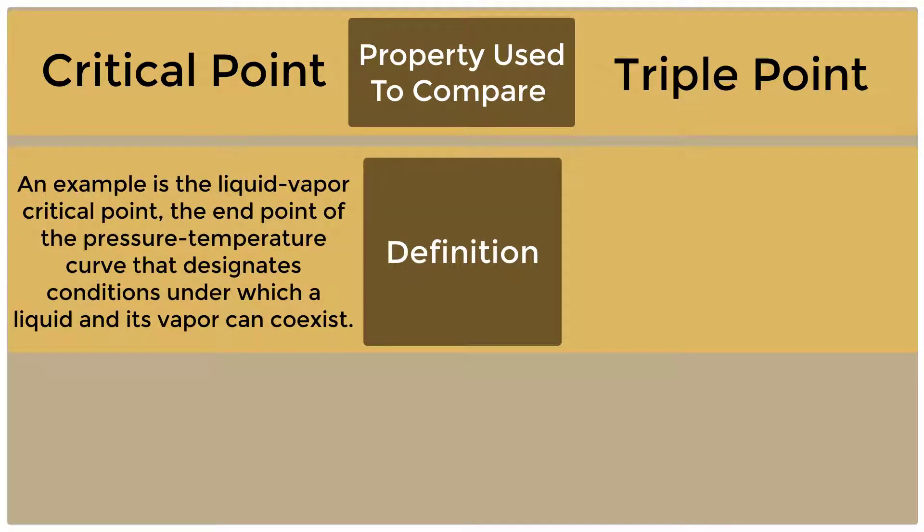An example is the liquid vapor critical point, the end point of the pressure temperature curve that designates conditions under which a liquid and its vapor can coexist.